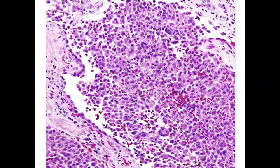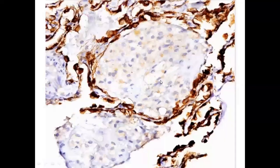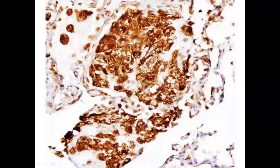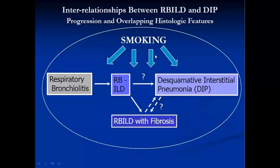If we use CD68 staining, it will highlight these macrophages, while CD68 will be negative on the alveolar septa. Conversely, if we do a pan-keratin stain, it will be positive on the alveolar septal cells — including type 1 and type 2 pneumocytes — but negative inside the air spaces. This pan-keratin stain is positive on the alveolar wall, while CD68 highlights those macrophages inside the alveolar spaces.